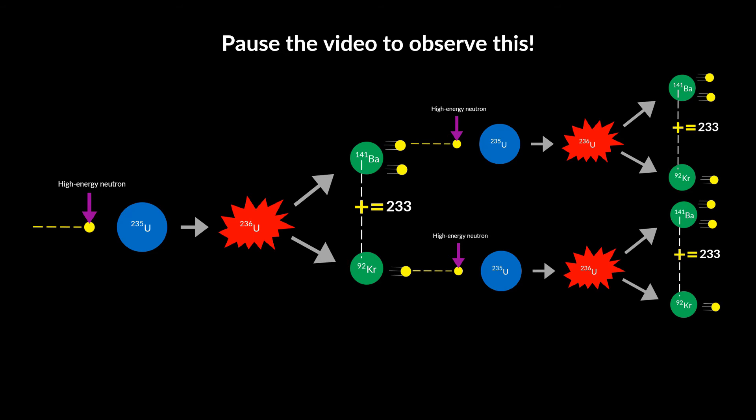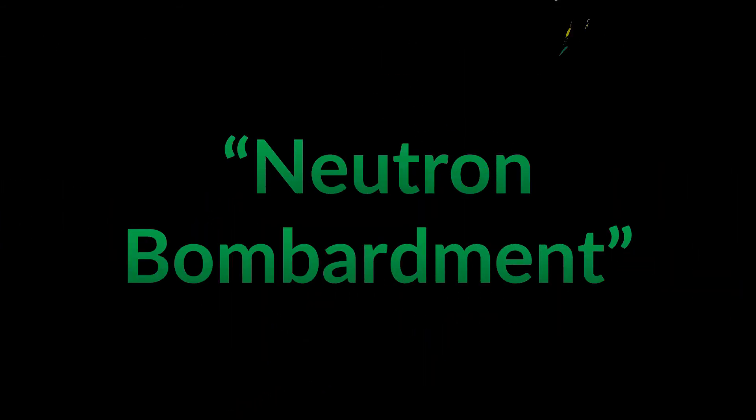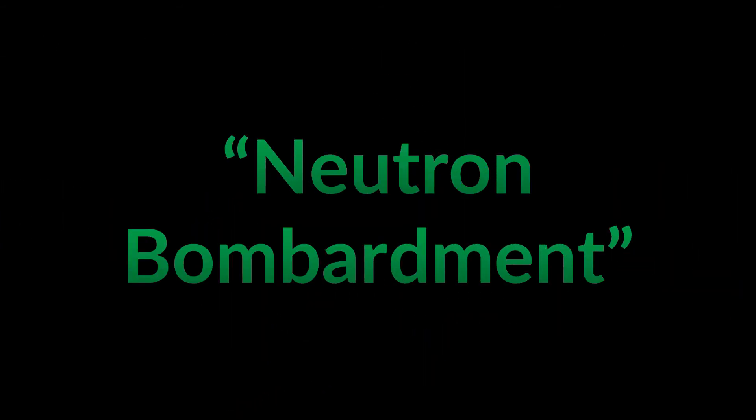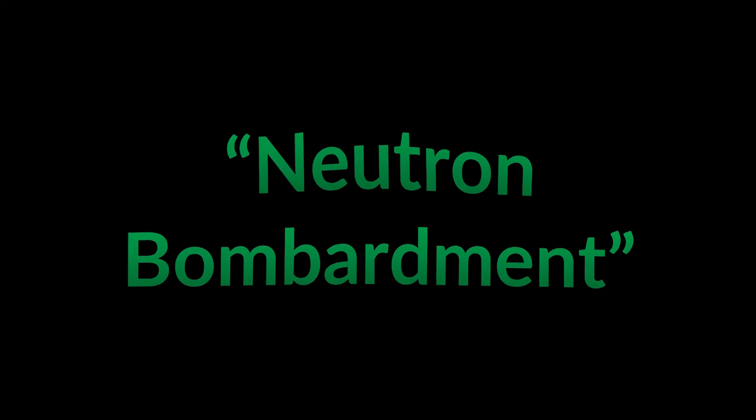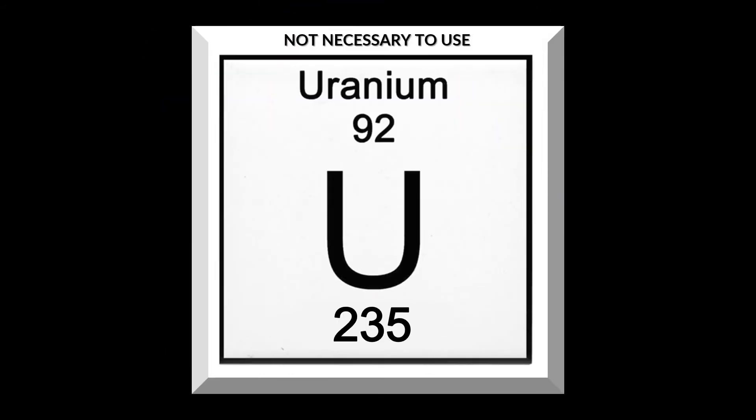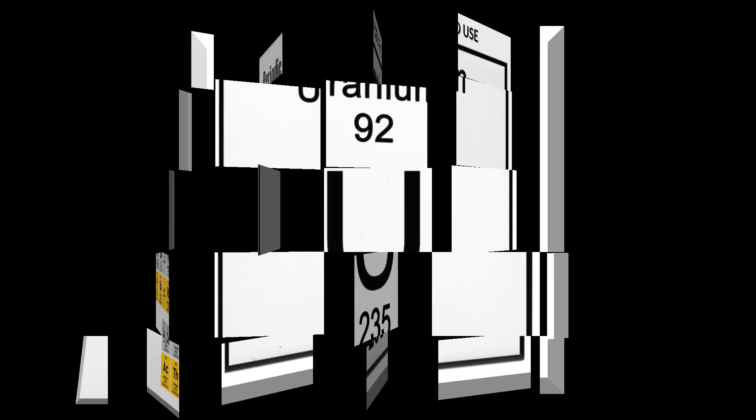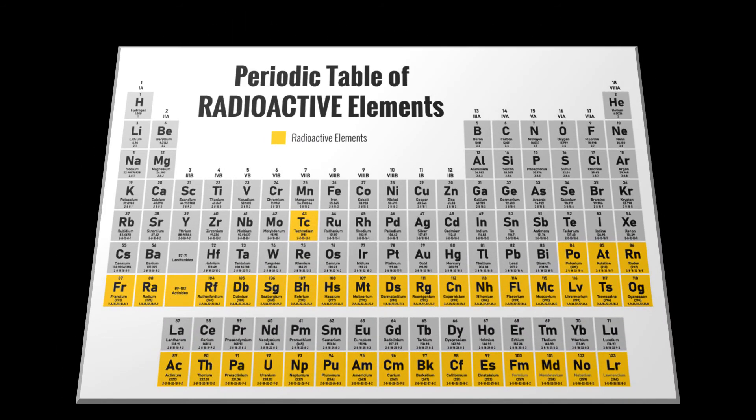This method of initiating nuclear fission is called neutron bombardment. There are a few things to be noted here. Though it is not necessary to use Uranium-235 for nuclear fission, it is necessary to use a radioactive element for nuclear fission because they are unstable. The radioactive elements are marked on the periodic table on screen.